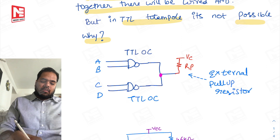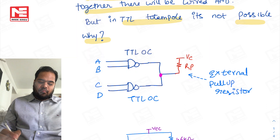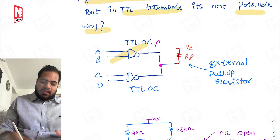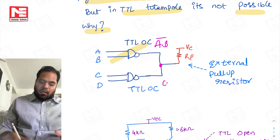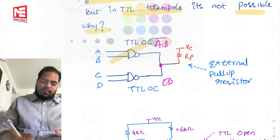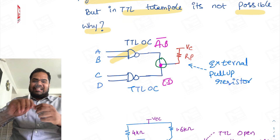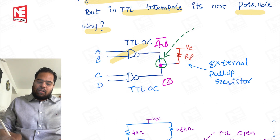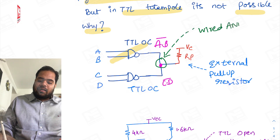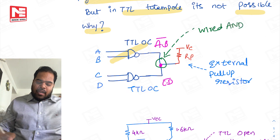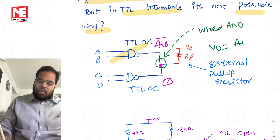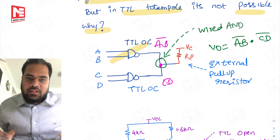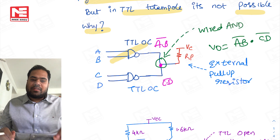Let us take a simple TTL circuit. Suppose I am taking a TTL open collector AND gate. Because this is an AND gate, the output expression here will be AB-bar and here the output expression is CD-bar. Since the outputs are tied together, this is called wired AND — there is no AND gate there but the logic behaves like one. The output expression V0 equals AB-bar dot CD-bar, so the circuit itself behaves like an AND gate.